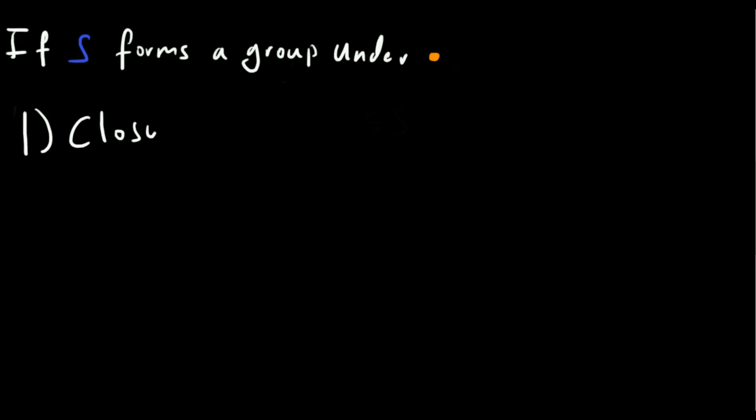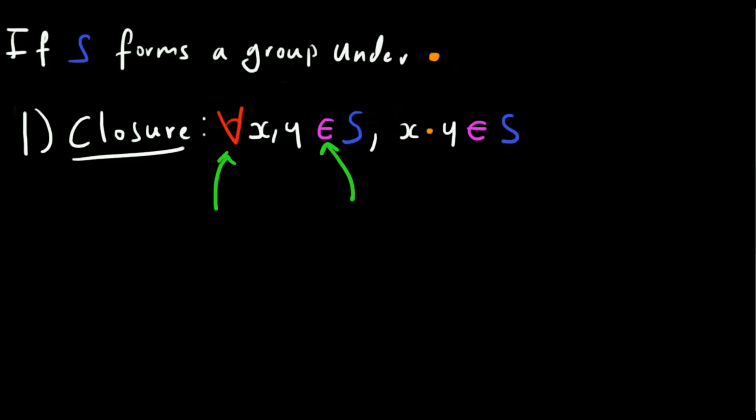The first of those is closure. If S forms a group under the action of some binary operation, then the axiom of closure says that for all X and Y that are elements of the set, then X.Y is also an element of the set. Note that here I'm using some mathematical logic notation. So closure is really just saying that if I combine any two elements in the set, the result will always be another element in the set.